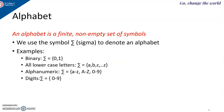Let us see some basic terminologies which we will be using in automata theory. First one is the alphabet. Alphabet is a finite non-empty set of symbols. We are going to make use of the symbol sigma to denote an alphabet. Example: binary alphabet is 0 and 1, and all lowercase letters — sigma equals a, b, c, up to z.